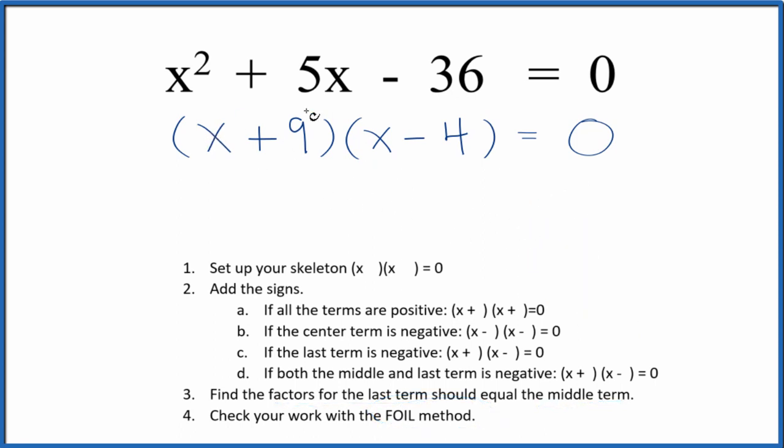So the first term, x times x, that's x squared. Outside, x times negative 4, that's negative 4x. Inside, 9 times x is 9x. And the last term, 9 times negative 4 is negative 36.